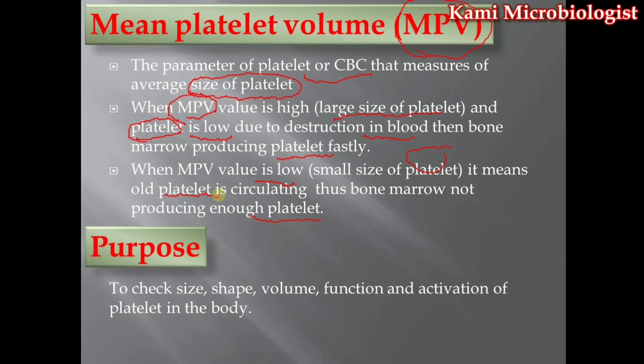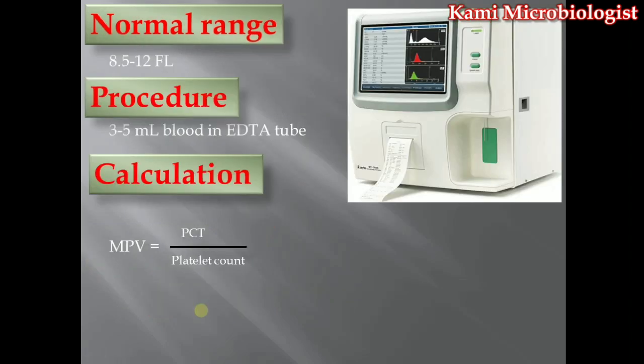Now let's talk about the main purposes of mean platelet volume. We mostly perform mean platelet volume to check the size, shape, volume, function, and activation of the platelet in the body. The normal range for mean platelet volume is 8.5 to 12 femtoliters.